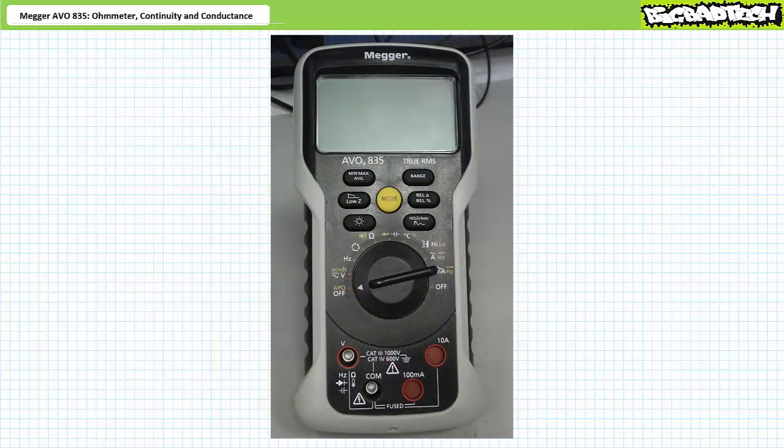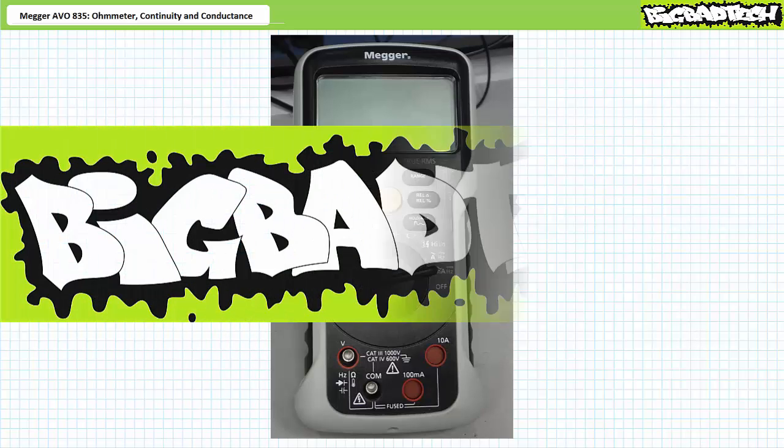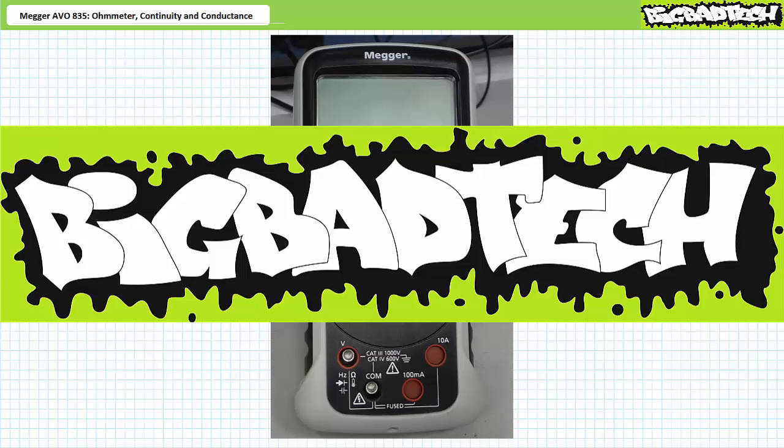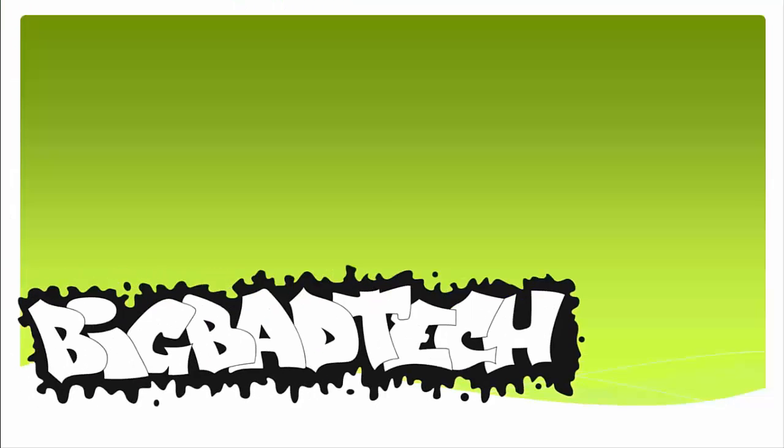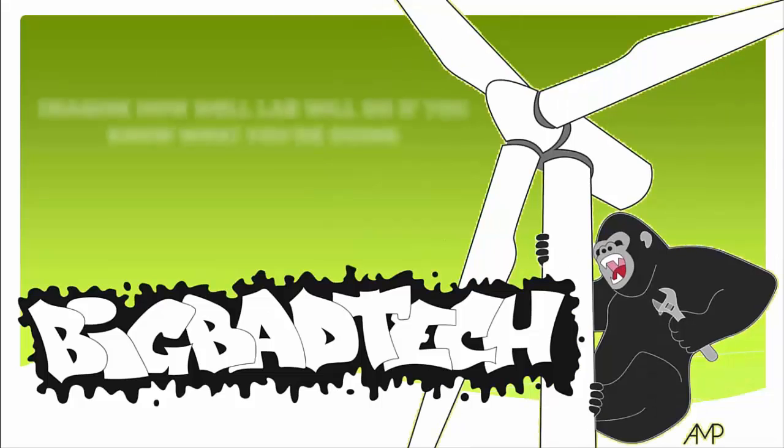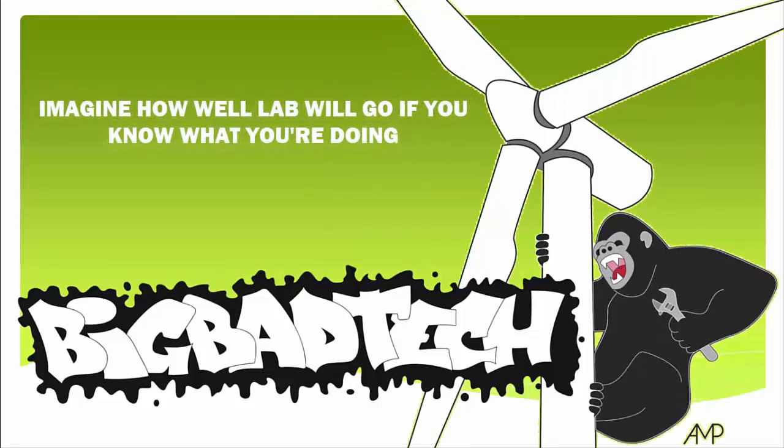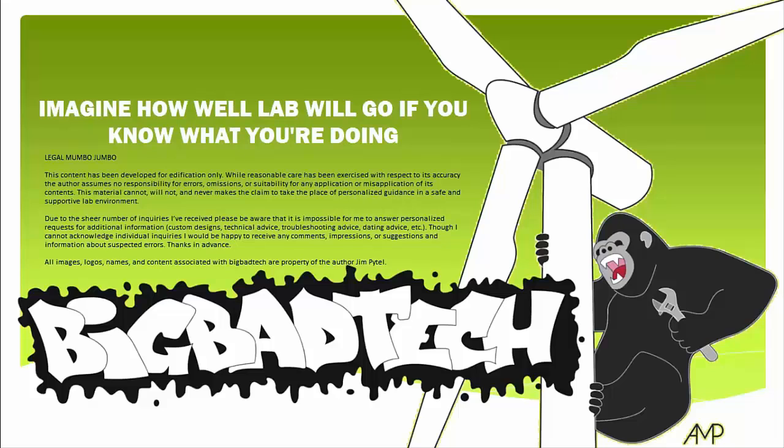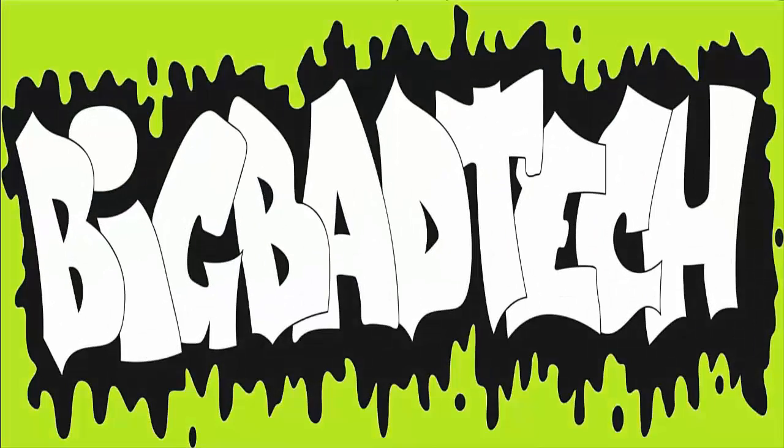All right, that's about it for this brief introduction of the Megger AVO835 digital multimeter and the ohmmeter continuity test and conductance measurement functions. We'll examine other functions and features of the DMM in later lectures. Thank you very much for your attention and interest. We'll see you again during the next lecture or series. Remember to tell your lazy lab partner about this resource. Be sure to check out the Big Bad Tech channel for additional resources and updates.